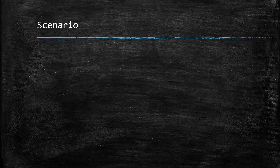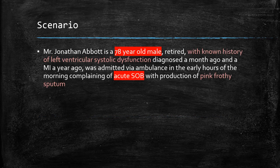So let's get started. The scenario is as follows. Mr. Jonathan Abbott is a 70-80 year old male, retired, with a known history of left ventricular systolic dysfunction diagnosed a month ago, with an MI a year ago. He was admitted via ambulance in the early hours of the morning complaining of acute shortness of breath with production of pink, frothy sputum. This fairly straightforward scenario points to heart failure.